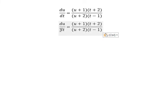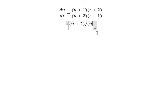We put dt to the right, u plus 1 over u plus 2 on the left. That should be u plus 2 over u plus 1 du equals t plus 2 over t minus 1 dt.